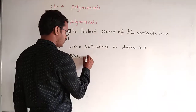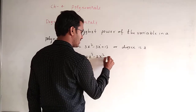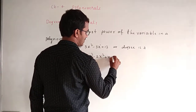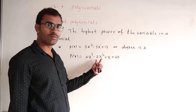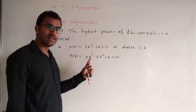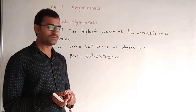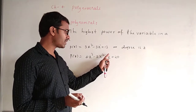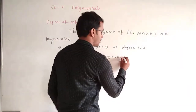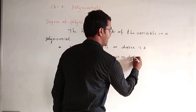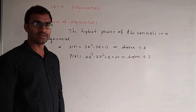One more example: P(x) = 4x³ − 2x² + x + 20. Here variable is x, with powers 1, 2, and 3. The highest is 3. Therefore, the degree of this polynomial is 3.